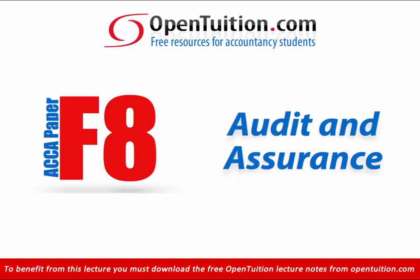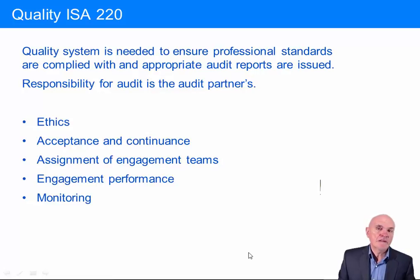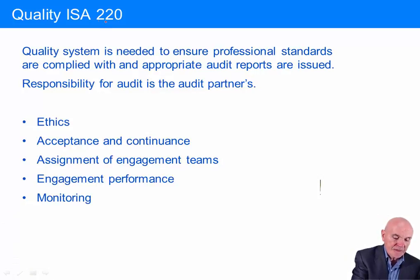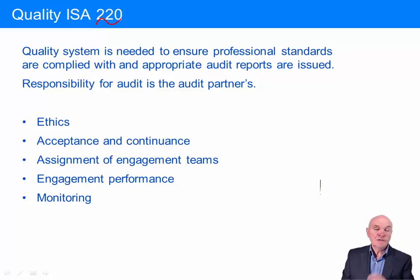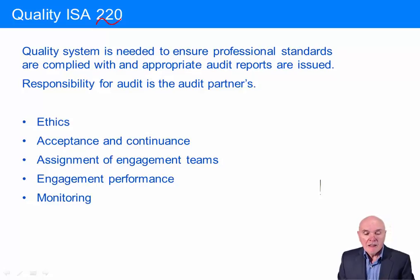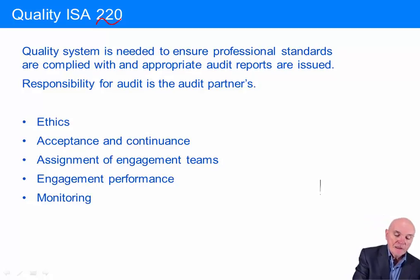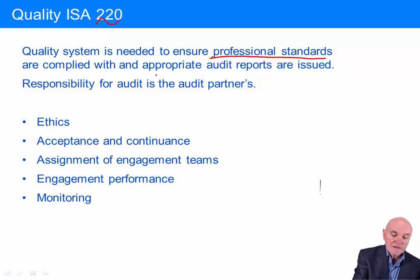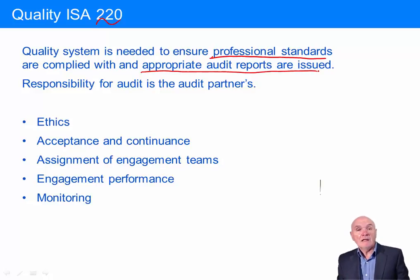This is a lecture from OpenTuition. For the free lecture notes that go with this podcast, please visit OpenTuition.com. The subject of quality control and audits has recently been added to the syllabus. This is essentially governed by ISA220, although you don't need to remember or quote the ISA numbers. The quality systems needed serve two objectives: to ensure that professional standards are complied with and that an appropriate audit report is issued.